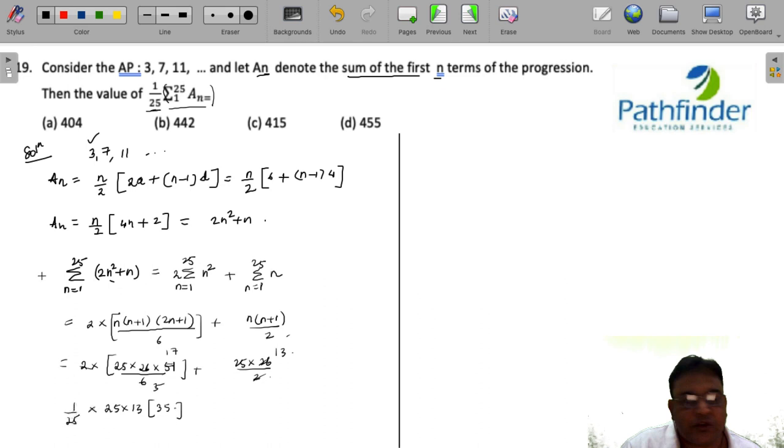Now we have to divide this by 25, the whole expression that we get. We have to multiply this by 1/25. Actually it should have been 1/25 times this whole value all along. Don't mind my incorrect use of brackets. So 25 cancels off and what do you get? 455 as the answer. The correct answer is 455.